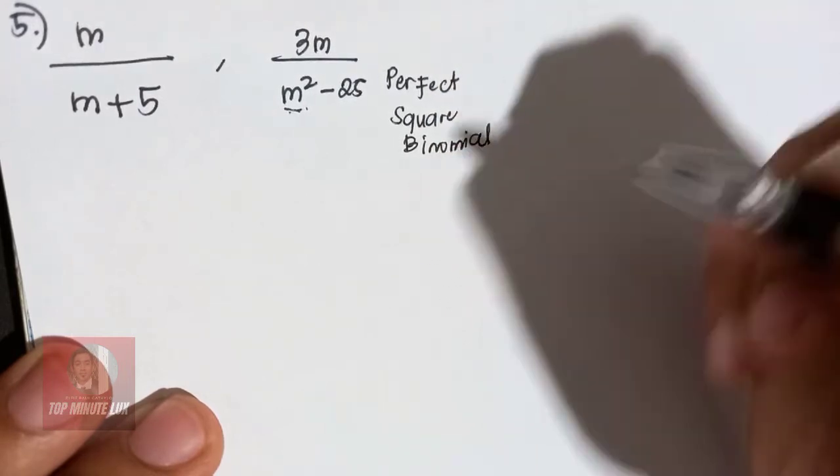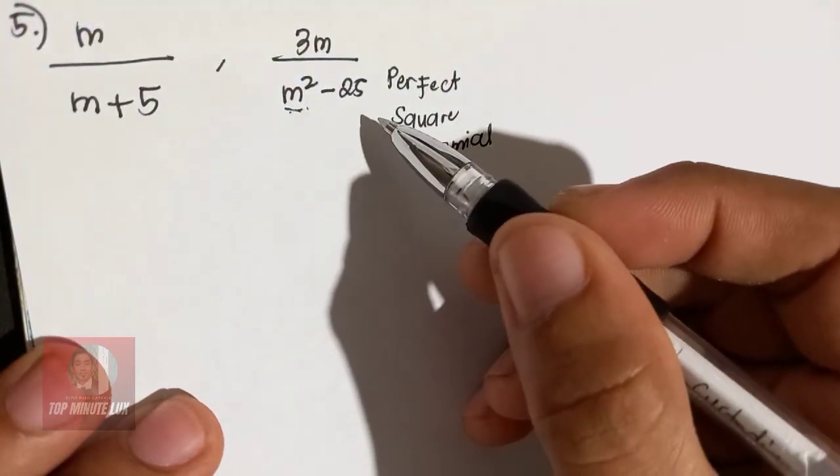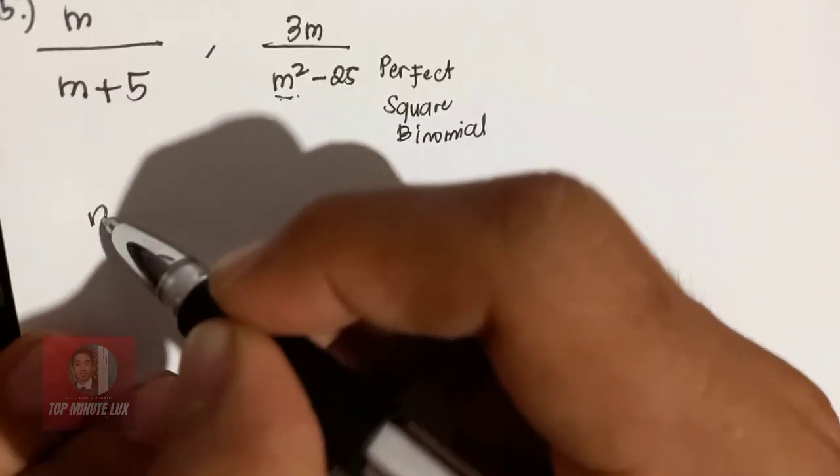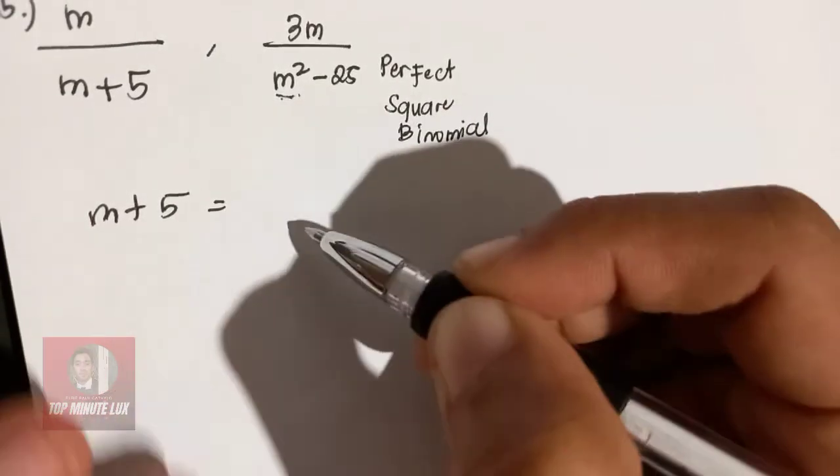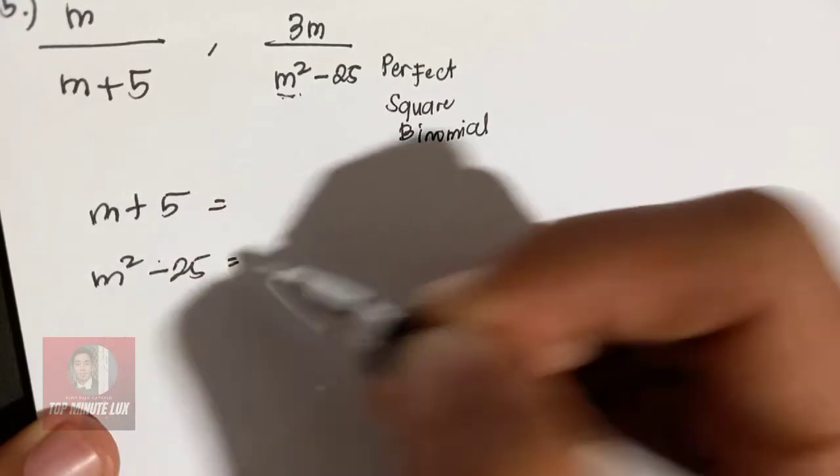So therefore, you can still factor this M squared minus 25. So how? M plus 5 equals M squared minus 25.